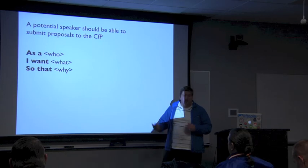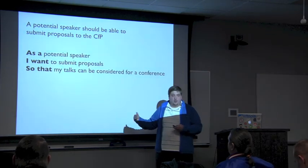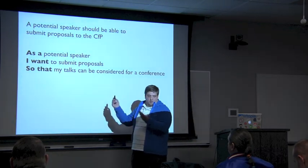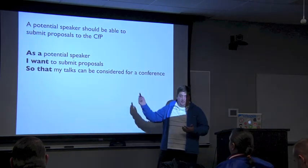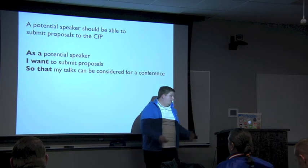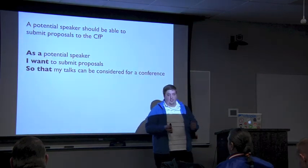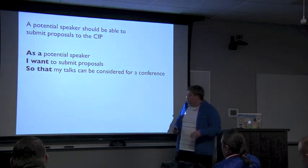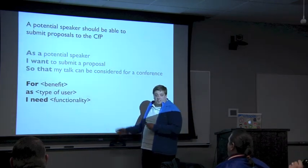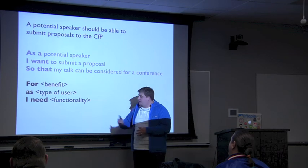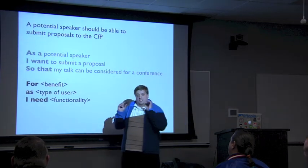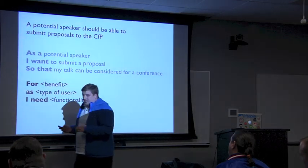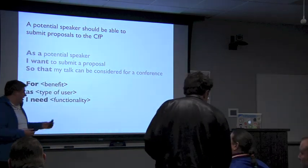A user story is a way to replace a requirements specification — that huge document at the start of a project specifying every pixel and every browser. That's just not realistic. User stories help you get into a mindset of providing business value. Applying the template, it would look like: 'As a potential speaker, I want to submit proposals so that my talks can be considered for a conference.' You might also reorder the template to emphasize the why: 'For some benefit, as a type of user, I need a functionality' — but don't let technical mumbo-jumbo get into your user stories.